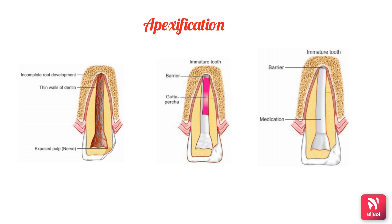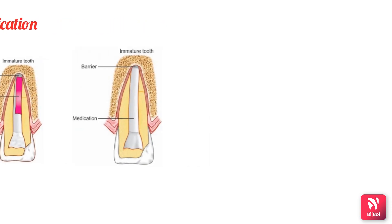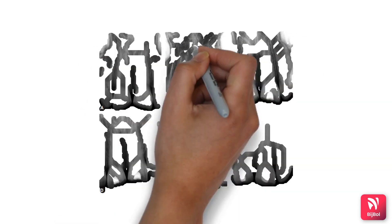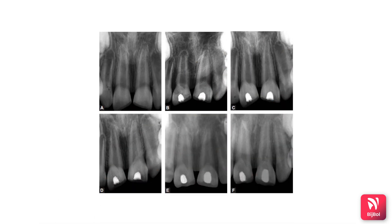When satisfactory hard tissue formation is confirmed, the canal is obturated using softened gutta-percha. In the illustrative case of the left and right central incisors, picture A shows the preoperative radiograph, picture B shows the calcium hydroxide pulpotomy, and follow-up at three and six months shows clear formation of a hard tissue barrier at the apex, after which obturation is performed.